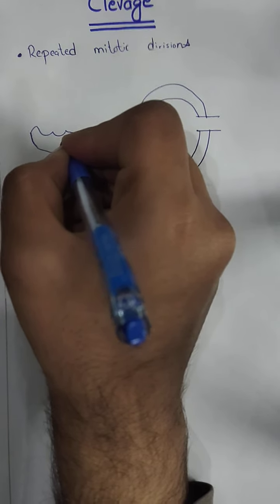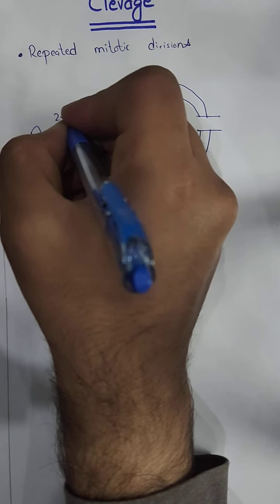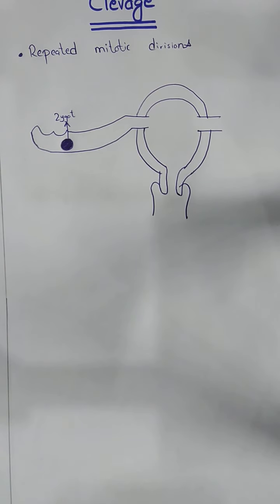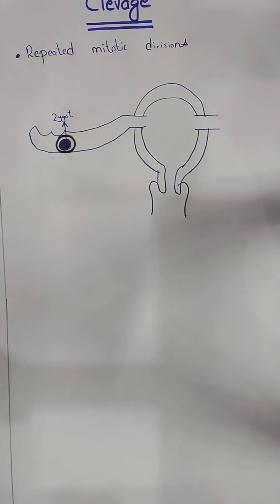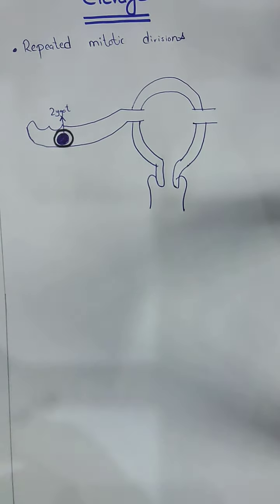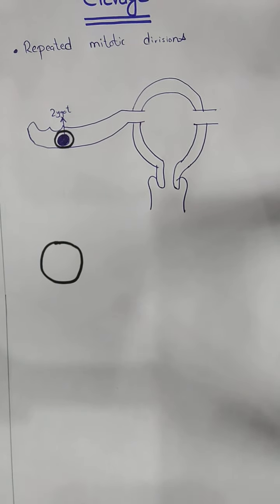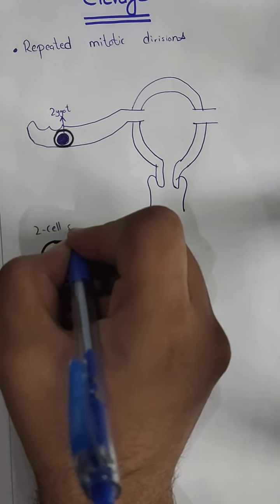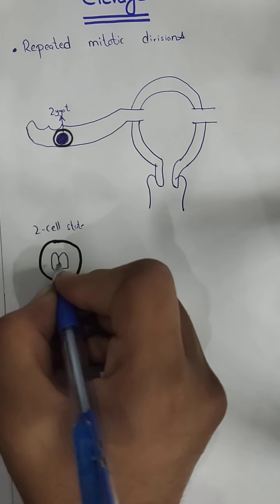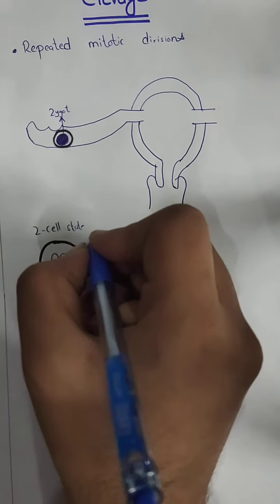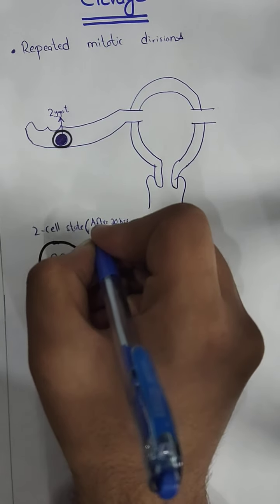Now, let's suppose that this is the zygote. This is the zygote. The division starts here within the zona pellucida. The first division gives us two cells — two blastomeres — and this two-cell stage begins approximately 30 hours after fertilization.